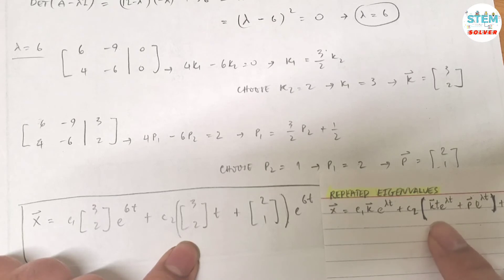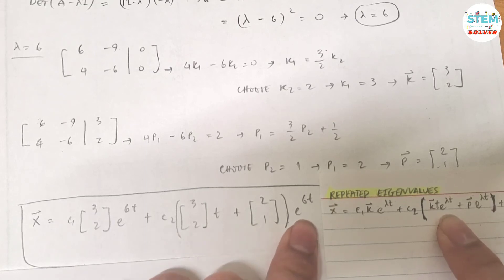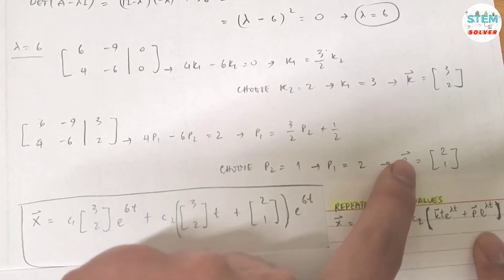Plus c2 times open parenthesis vector k, which is 3, 2, times t, times e to the lambda t, which is e to the 6t, plus vector p. Your vector p is 2, 1.